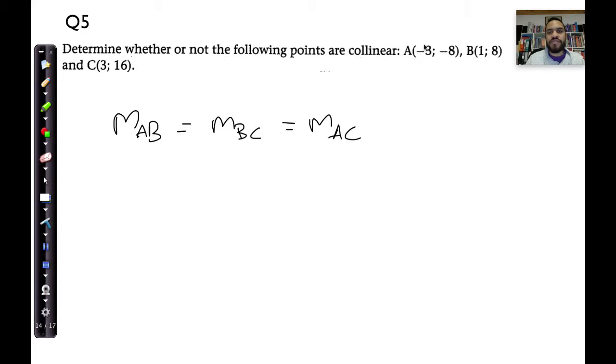Now, by now you've seen us calculate the gradients a few times. Let's take the gradient between B and A, and I'll take B's first and then move to A's. Remember, the gradient formula is just M is equal to Y2 minus Y1 over X2 minus X1. So, let's start with M_AB.